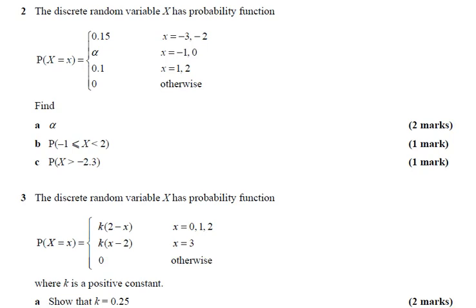We're going through some discrete random variable questions here. Let's have a look at the first one. In these questions, they are telling us that the probability can be different for different values. This large bracket is saying that this is what the probability is, and it can be four different things in four different situations. So for values minus three minus two, it's 0.15. Minus one and zero, it's alpha.